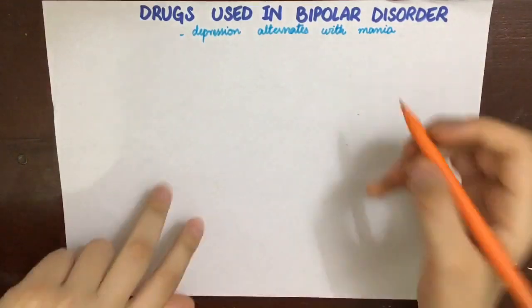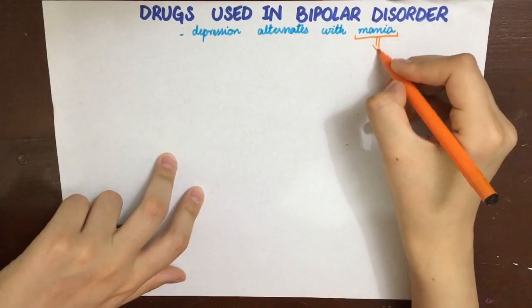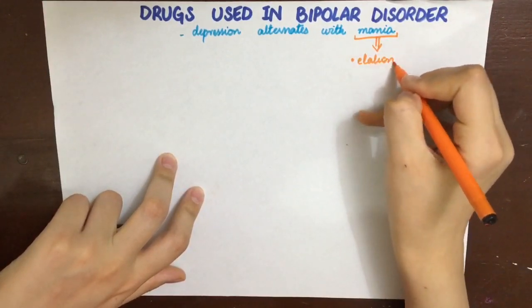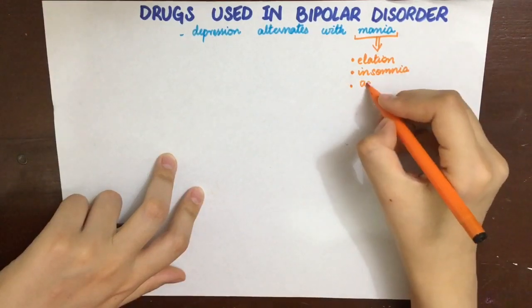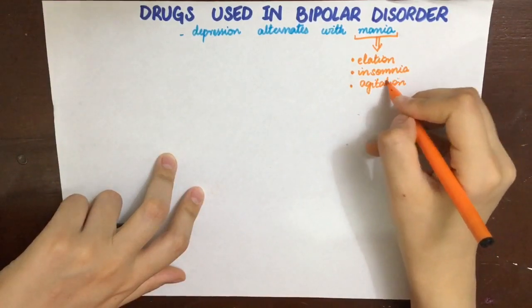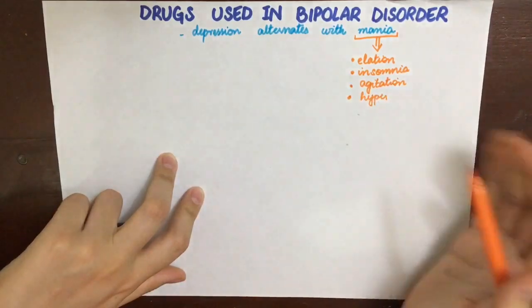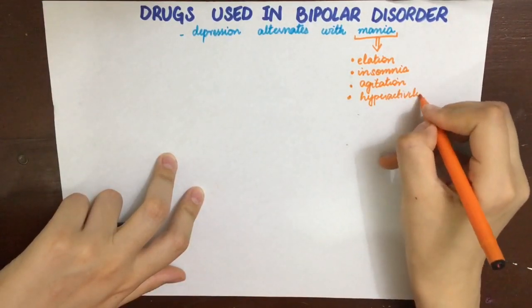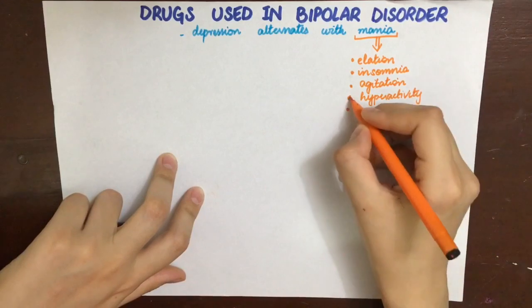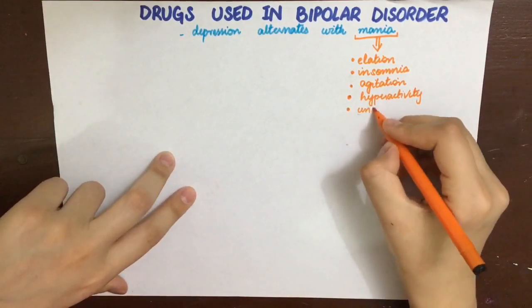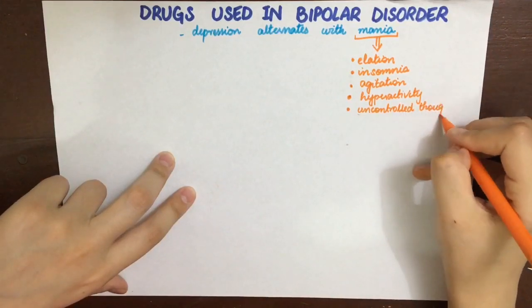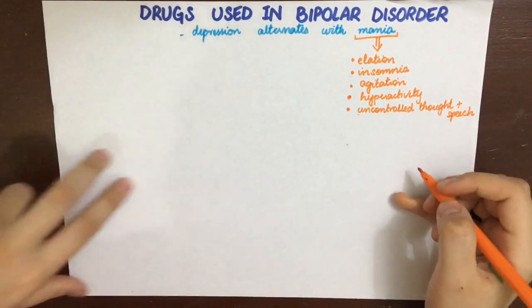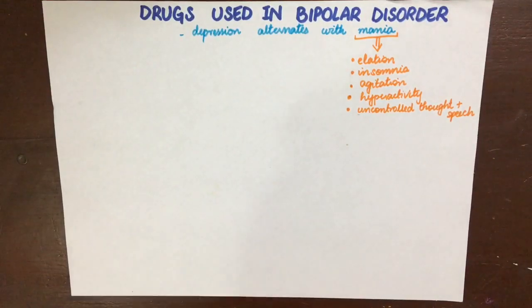The chief symptoms will be elation — that is extreme happiness — insomnia, agitation, hyperactivity, and uncontrolled thought and speech processes. Bipolar disorder has two poles: at one pole we have extreme depression, and at the other pole we have extreme excitation, that is mania. For the depressive phase we have antidepressants, but in this video we are going to discuss the drugs used specifically for the manic phase of bipolar disorder.